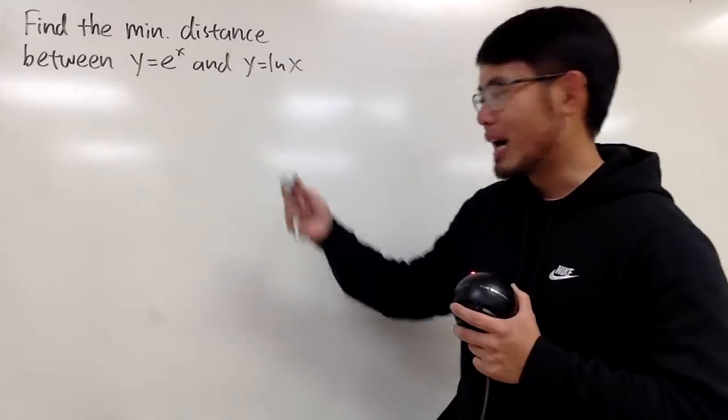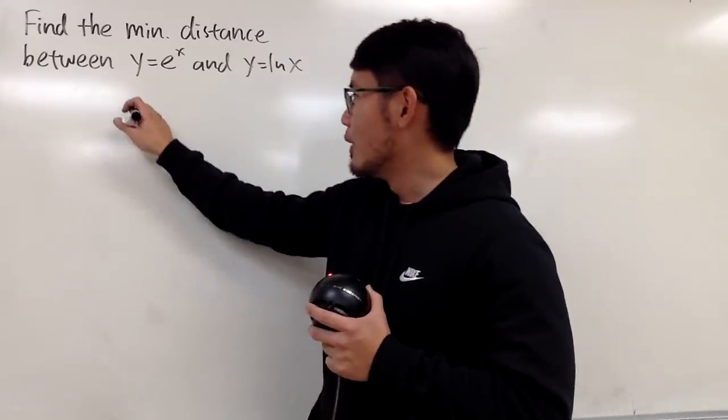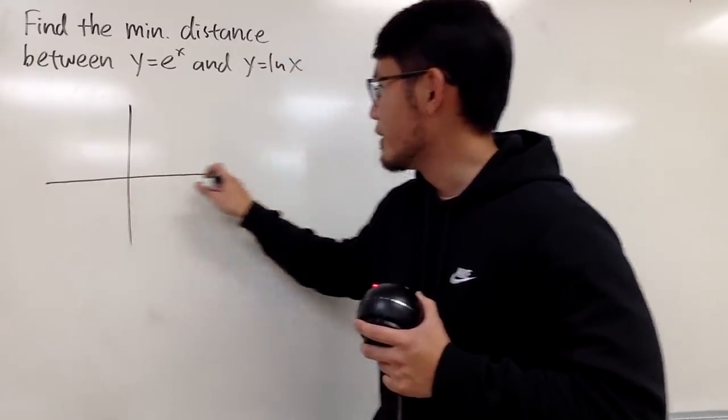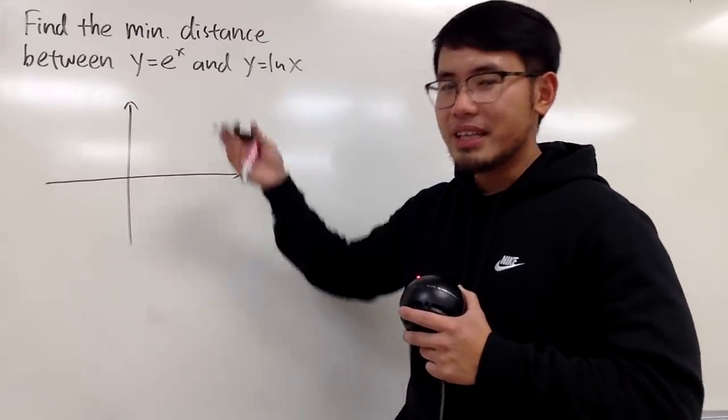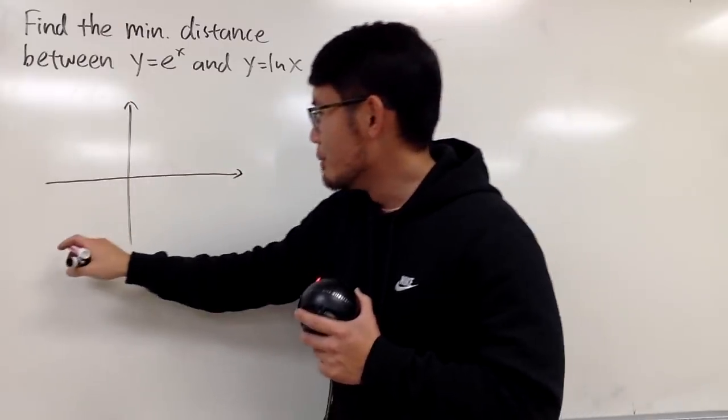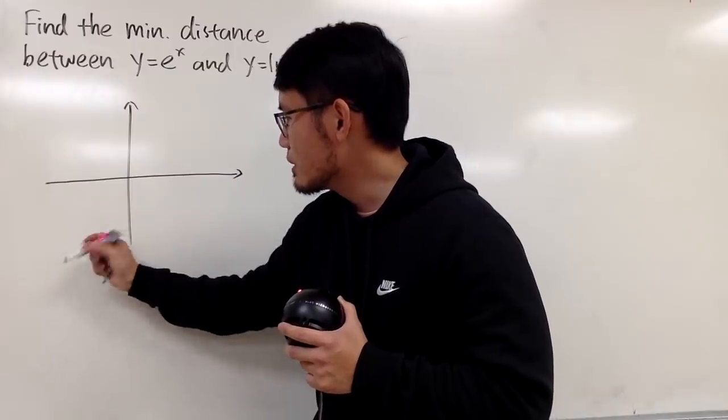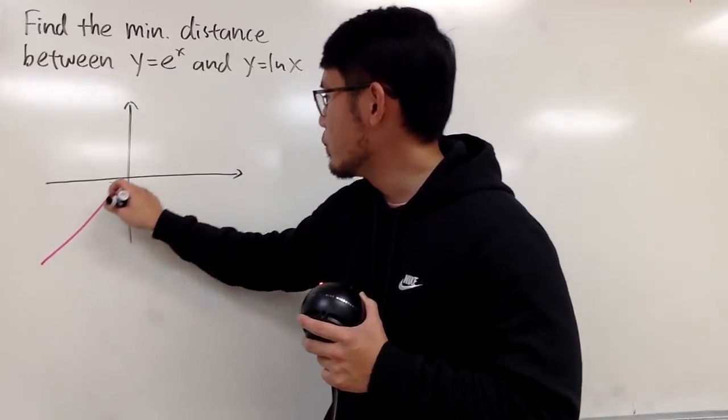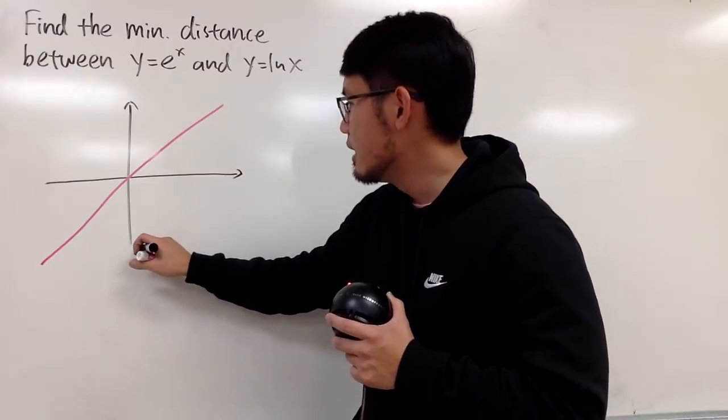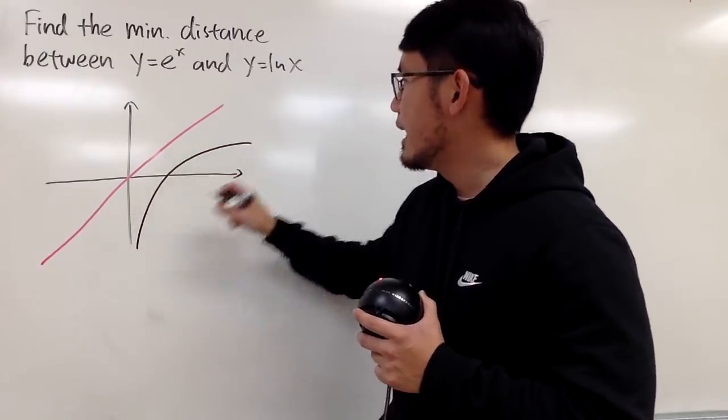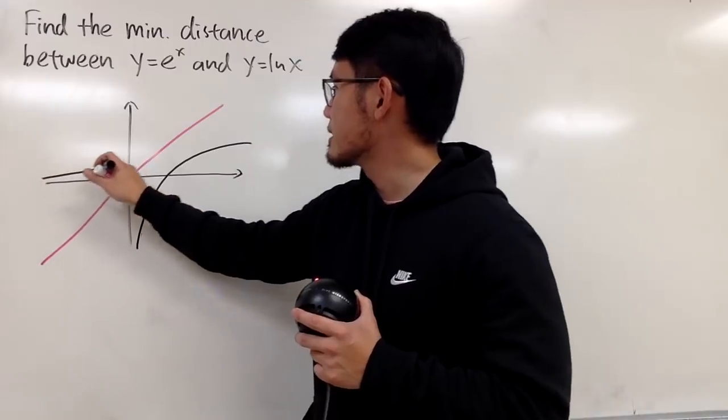It would be nice to have a picture first. The connection between e^x and ln(x) is that they are inverses of each other. To make the picture better, I'll draw the diagonal, y equals x, first. This is ln(x), and this is e^x.